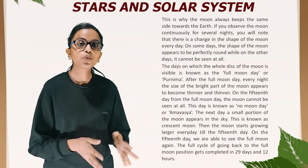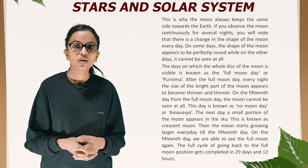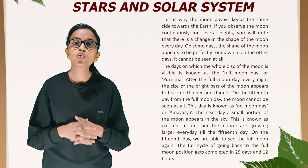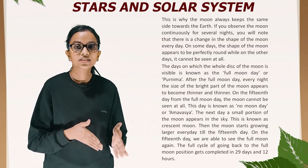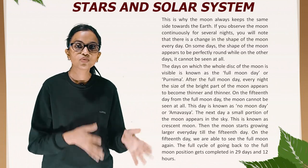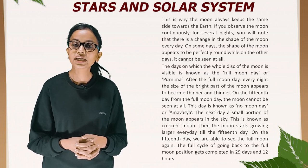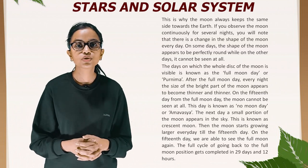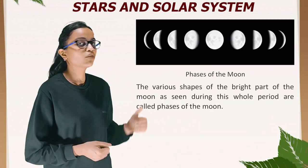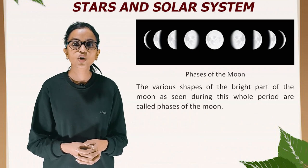The days on which the whole disk of the Moon is visible is known as the full moon day or Purnima. After the full moon day, every night the size of the bright part of the Moon appears to become thinner and thinner. On the 15th day from the full moon, the Moon cannot be seen at all — this day is known as no moon day or Amavasya. The next day a small portion of the Moon appears in the sky, known as crescent moon. The Moon then grows larger every day until the 15th day when we see the full moon again. The full cycle gets completed in 29 days and 12 hours. The various shapes of the bright part of the Moon seen during this whole period are called phases of the Moon.